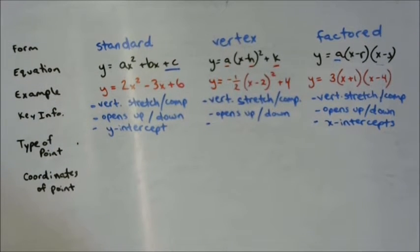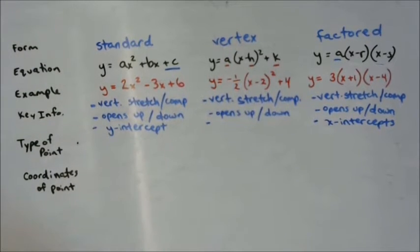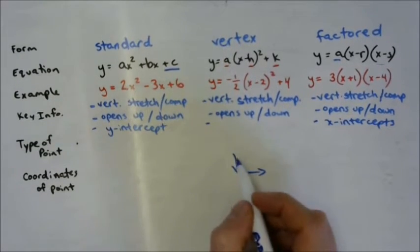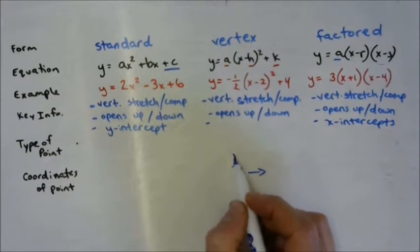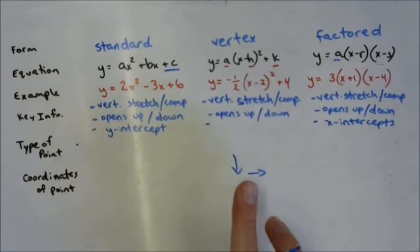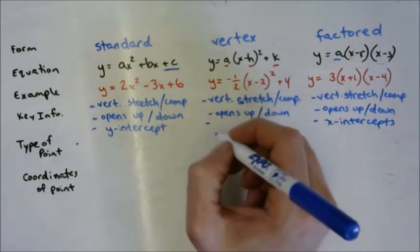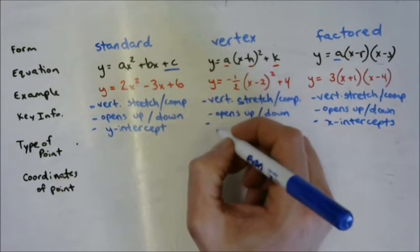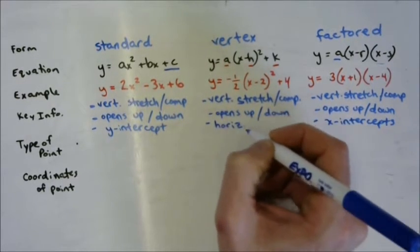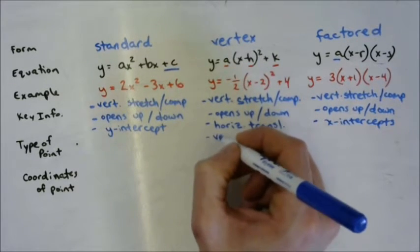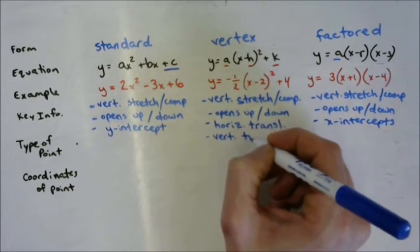Vertex form — what does it tell you? The vertex. If the vertex isn't at (0, 0) and it's moved a little bit down and a little bit over, what are those moves called? Translation. So vertex form is going to tell us the horizontal translation and the vertical translation — they're not changing the shape at all, just moving where it is.